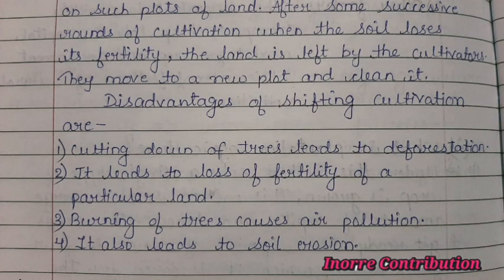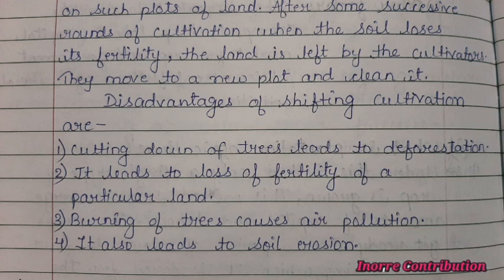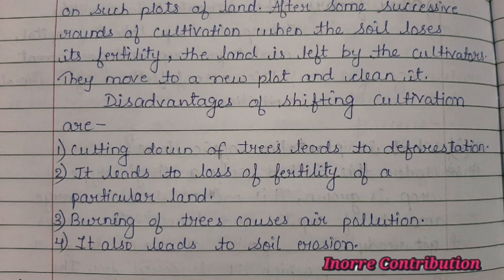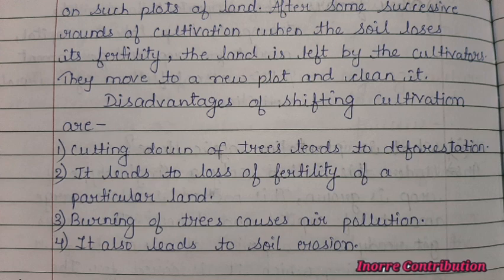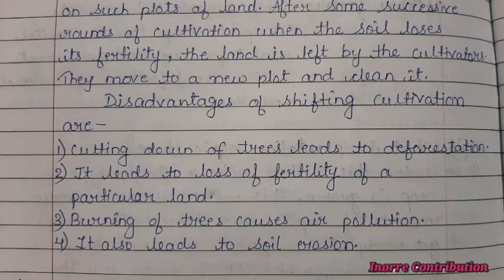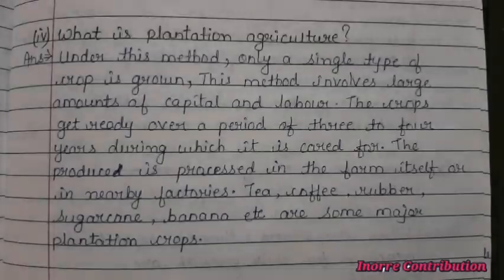After successive rounds of cultivation, when the soil loses its fertility, the land is left by the cultivators and they move to a new plot. Disadvantages of shifting cultivation: first, cutting down of trees leads to deforestation; second, it leads to loss of fertility of land, that is land degradation; third, burning of trees causes air pollution; fourth, it also leads to soil erosion.